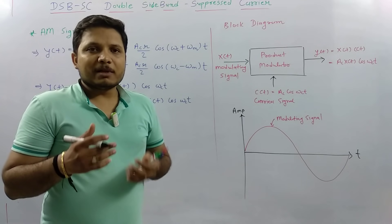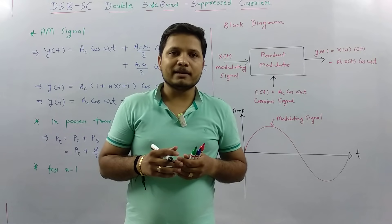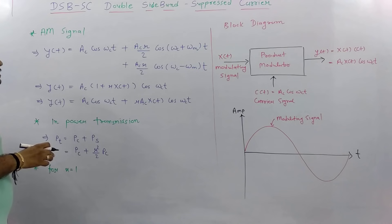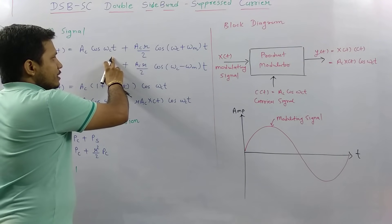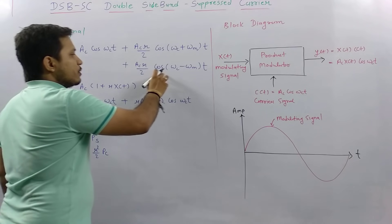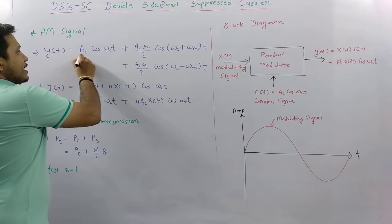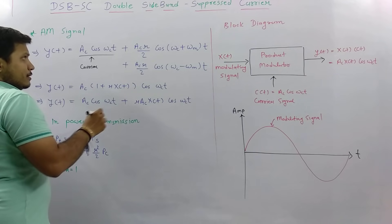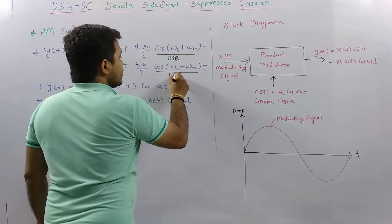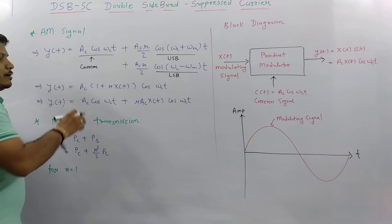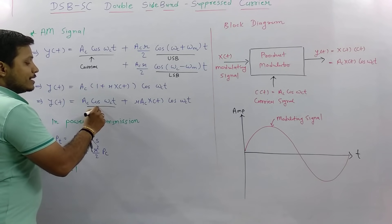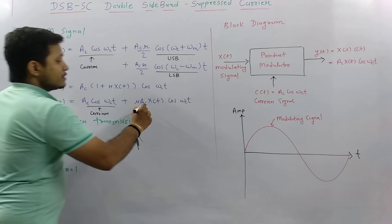Before we go for double sideband suppressed carrier, I have already explained amplitude modulated signal. We derived the AM signal equation: the output YT equals AC cos(ωC·t) plus (μ·AC/2)·cos((ωC + ωM)·t) plus (μ·AC/2)·cos((ωC − ωM)·t). Here the first term is the carrier signal, the second is the upper sideband, and the third is the lower sideband.